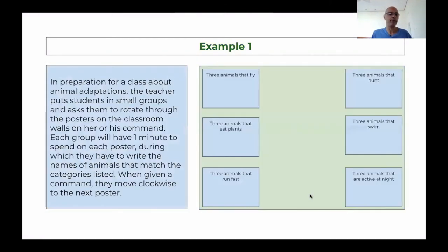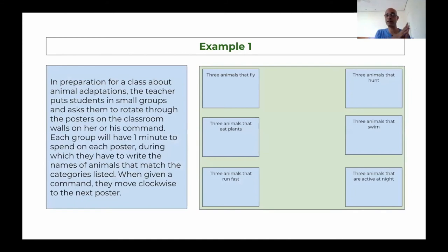In preparation for a class about animal adaptations, the teacher puts students in small groups and asks them to rotate through the posters on the classroom walls on command. Each group will have one minute to spend on each poster. They have to write the names of animals that match the categories listed. When given the command, they move clockwise to the next poster. Categories include: three animals that hunt, three that swim, three that are active at night, three that run fast, three that eat plants, and three that fly. They discuss, agree on the list, and write those animals. When time is up, they move to the next poster clockwise.